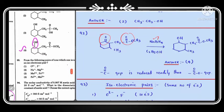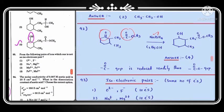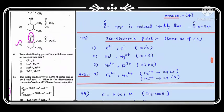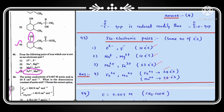Question number 93: which pair is not isoelectronic? Option 1: O²⁻ and F⁻ both have 10 electrons. Option 2: Na⁺ and Mg²⁺ both have 10 electrons. Option 3: Mn²⁺ and Fe³⁺ both have 23 electrons. Option 4: Fe²⁺ has 24 electrons and Mn²⁺ has 23 electrons — these are not isoelectronic. Option 4 is the correct answer.